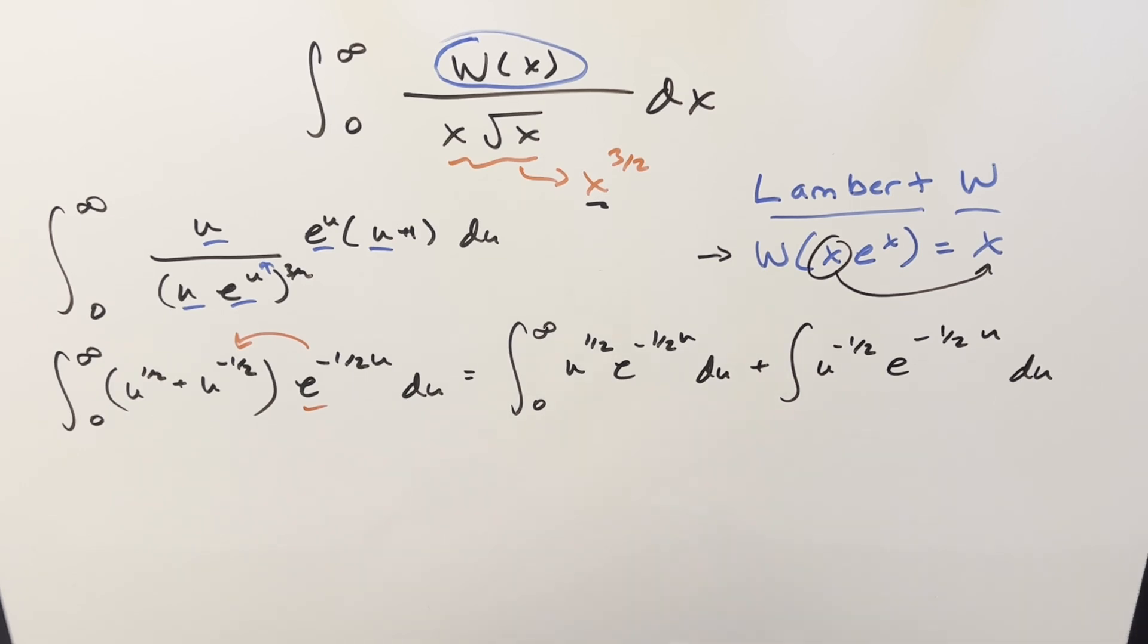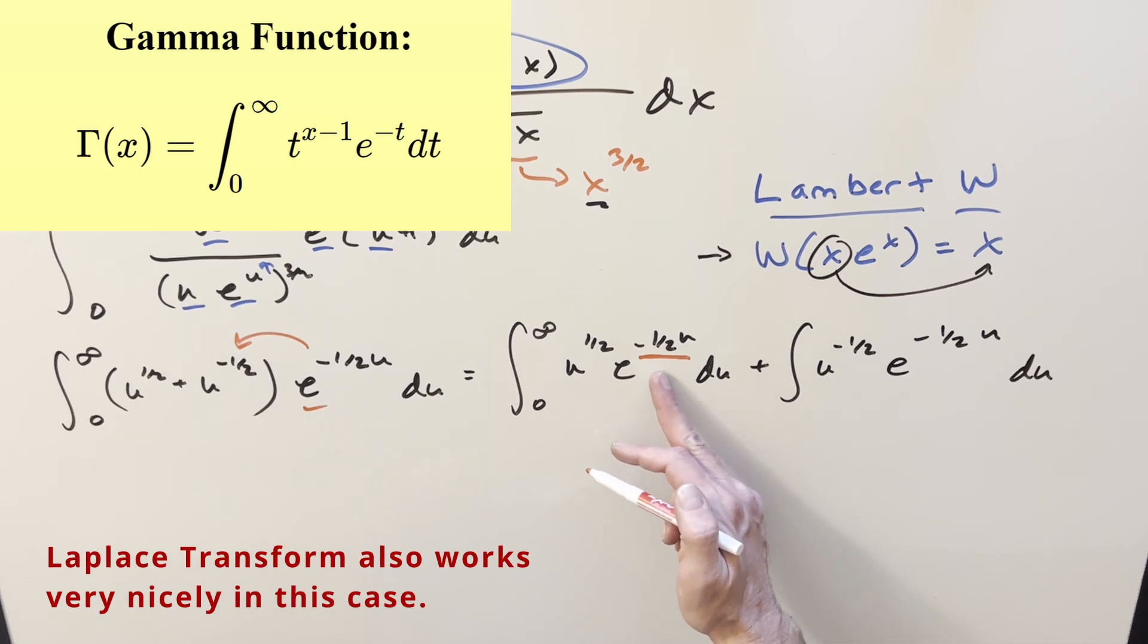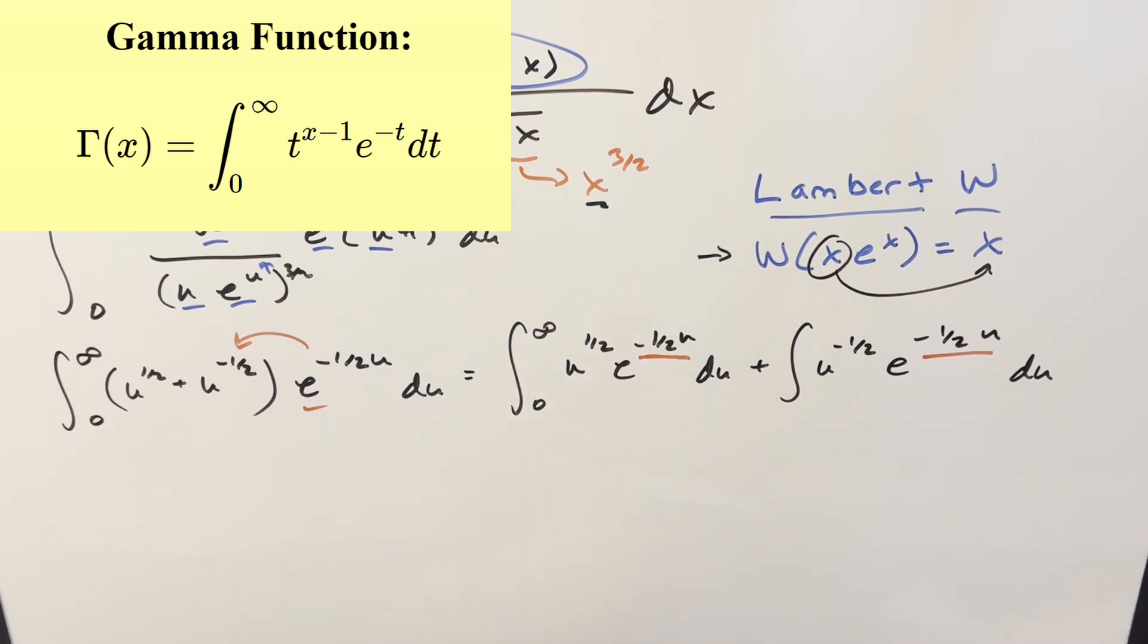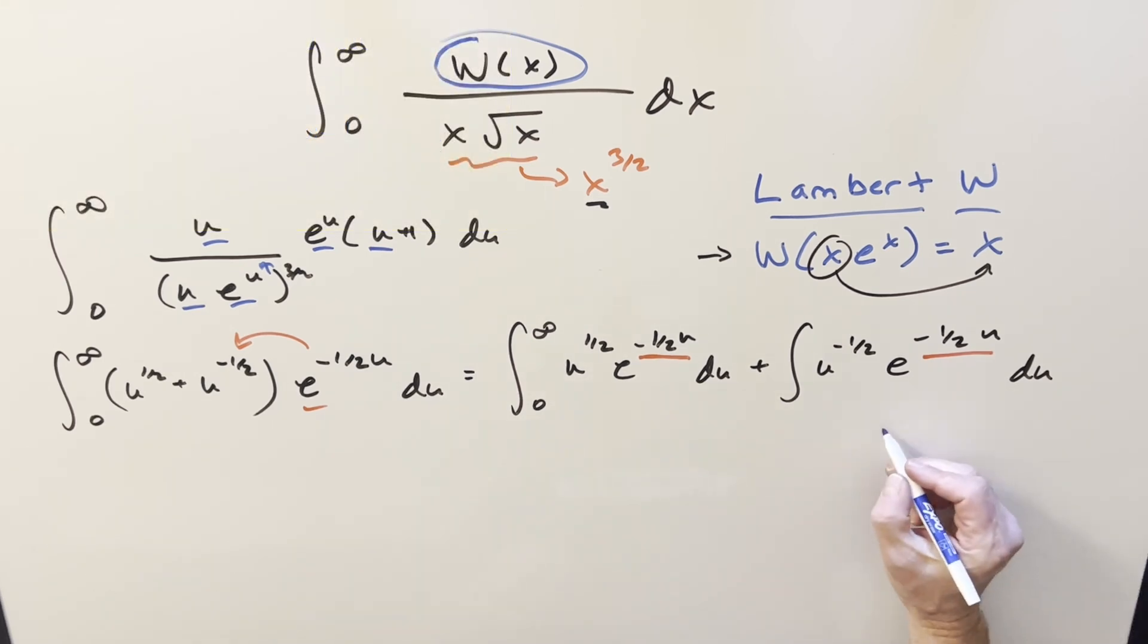At this point, both these integrals are looking really close to something we can use the gamma function on. But the only thing is for the gamma function, this exponent should just be minus u. Same thing with this one here. So what I'll do is I'm going to do one substitution for both these integrals just to clean up that piece. So what we'll do is I'll set t equal to one half u or u over 2. Then of course, solving for u, u is going to be 2t. Take a derivative, then du is going to be 2 dt. And as you can see, I forgot my bounds here. This is still 0 to infinity.